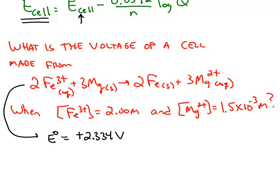Now that's only when the concentrations are standard concentrations, one mole per liter for solutions, one atmosphere or one bar for gases. We want to use the Nernst equation to calculate the voltage when the iron is 2 molar and the magnesium is 1.5 times 10 to the negative 3 molar.